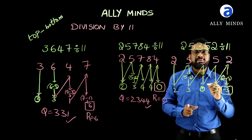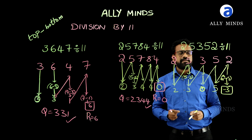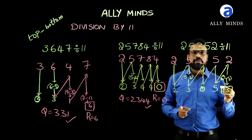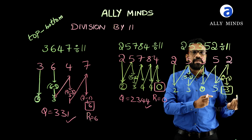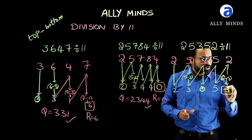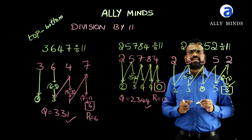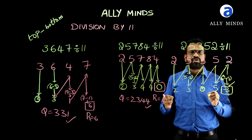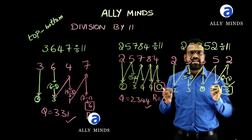Here, the last digit always represents the remainder, but a negative number cannot be the remainder. To learn this method further, please download the app AliMinds.